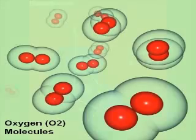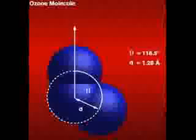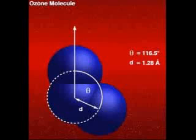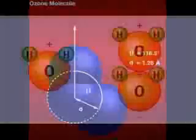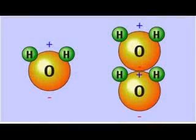However, under certain circumstances, oxygen atoms bond into triplets — O3 — forming a molecule known as ozone. Other familiar molecules include water, consisting of two hydrogen atoms and one oxygen atom, H2O, sometimes called dihydrogen monoxide.